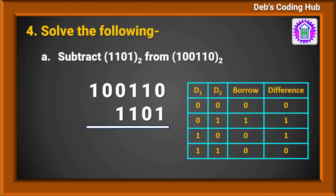If I deduct 0 from 0, that is 0 minus 0, the result will be 0 and there is no borrow. If I deduct 1 from 0, it will be 1 as difference and 1 as borrow. This is because when 0 is smaller than 1, we add the base of the system which is 2, so 10 in binary minus 1 equals 1. Then 1 minus 0 is 1 with no borrow, and 1 minus 1 is 0 with no borrow.